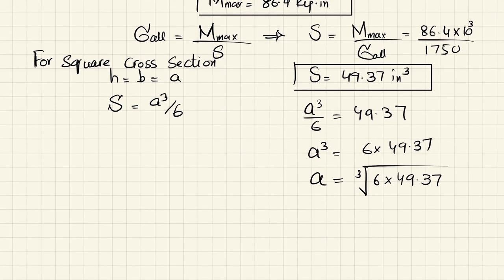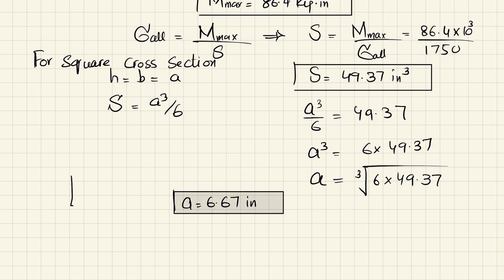using scientific calculator you can get the value of a, and here the value of a comes out to be 6.67 inches. So it means that a rectangular, square cross-section of